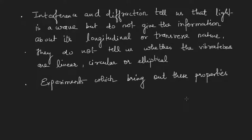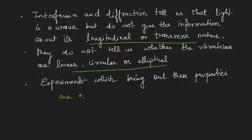Interference and diffraction experiments tell us about the wave nature of light, but they do not give any information about the type of wave — whether they are longitudinal or transverse, whether the vibrations are linear, circular, or elliptical. The experiments which bring out these properties are known as polarization experiments. So this is our next topic: how polarization of light takes place, what are the different methods, what is polarization, and how can we achieve it.